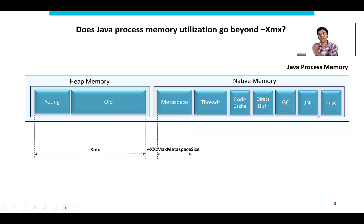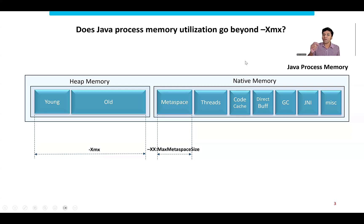So when you set XMX, you are setting only a portion of your Java process memory size. For most applications it accounts for 80 to 90%, but there are other regions like metaspace, threads, code cache, direct buffer, GC, JNI, and miscellaneous — all outside of XMX. Your Java process will consume more than the XMX you are setting. This information is very relevant when you are troubleshooting out of memory errors.